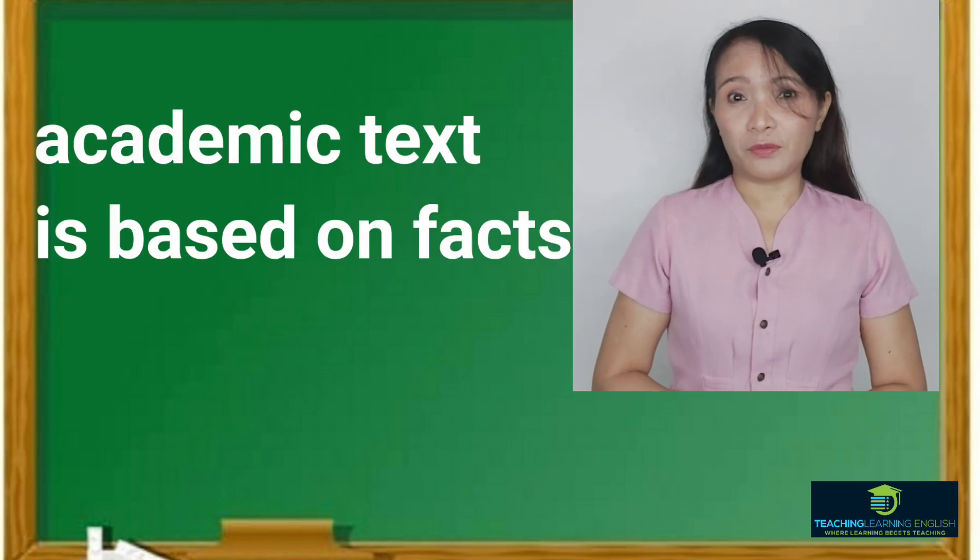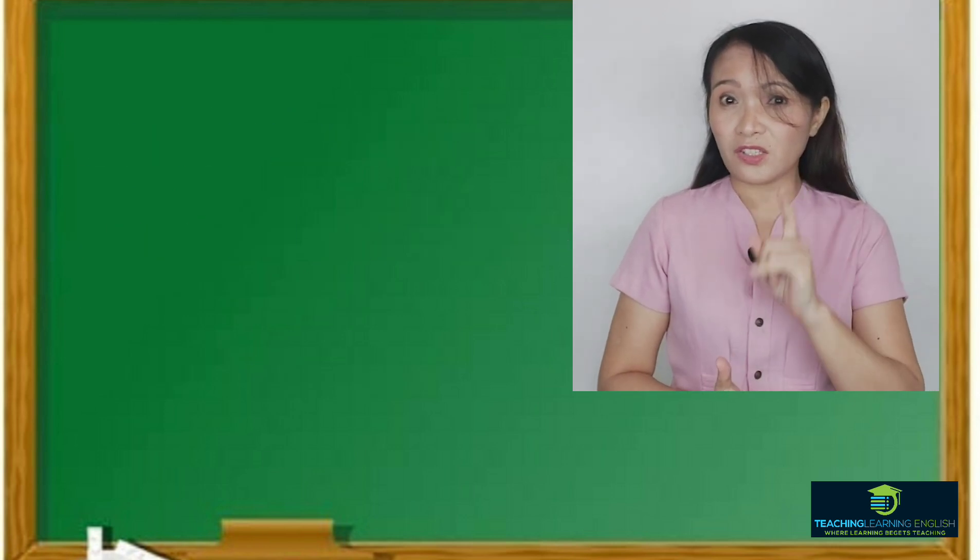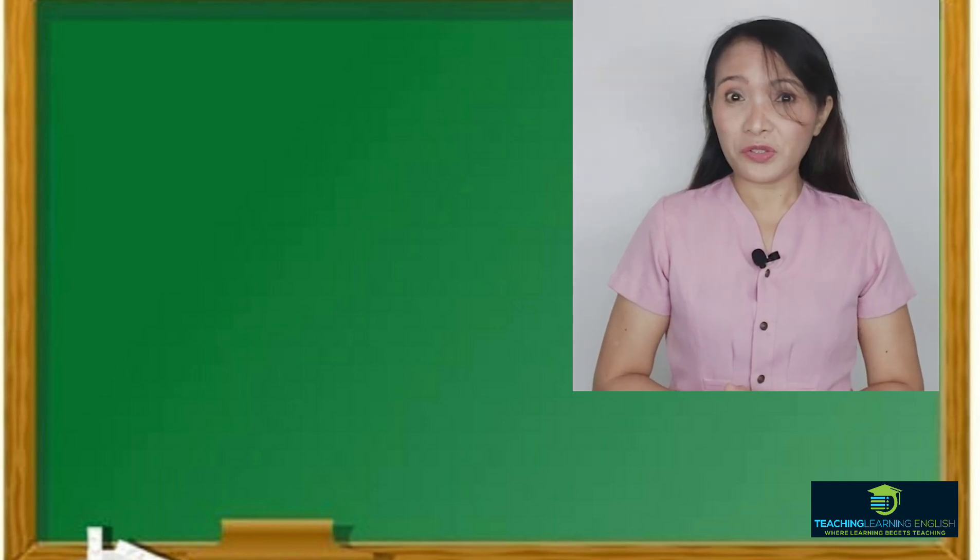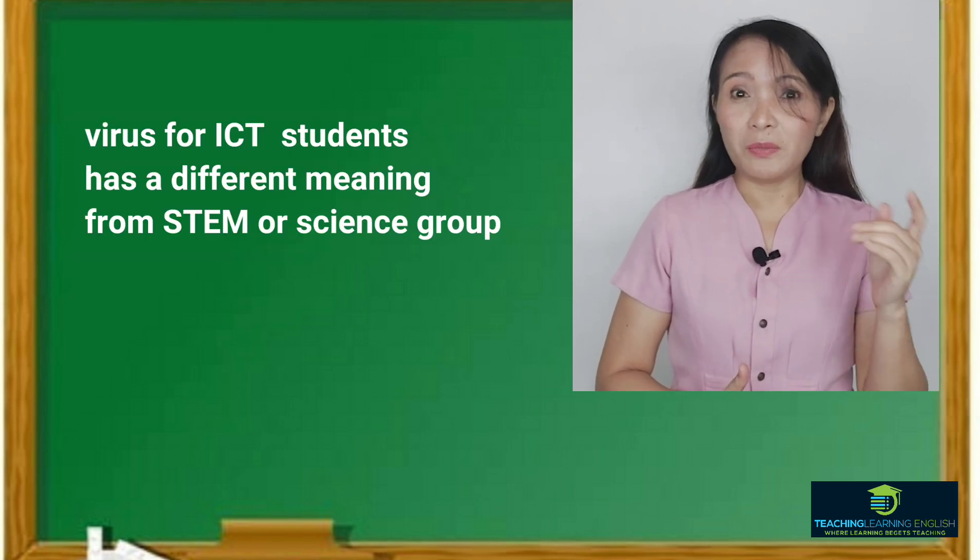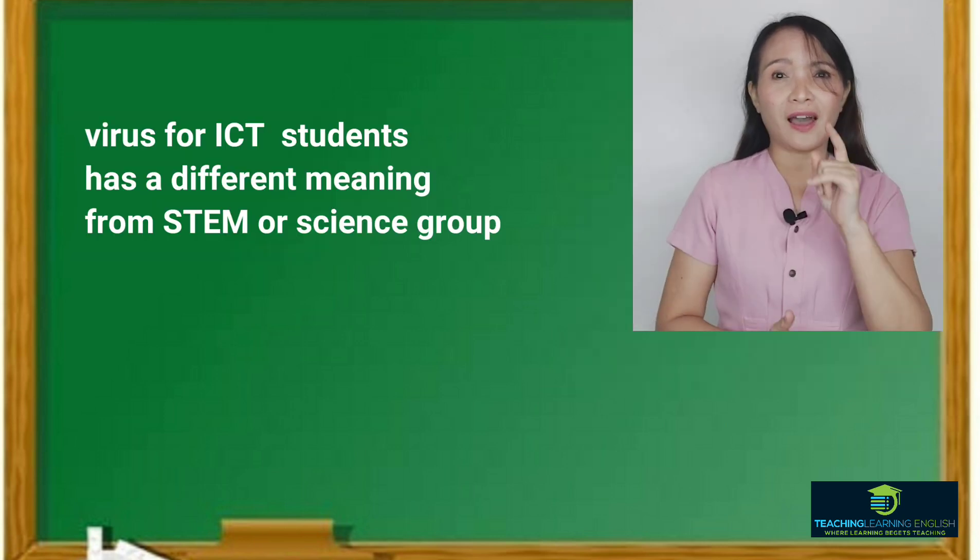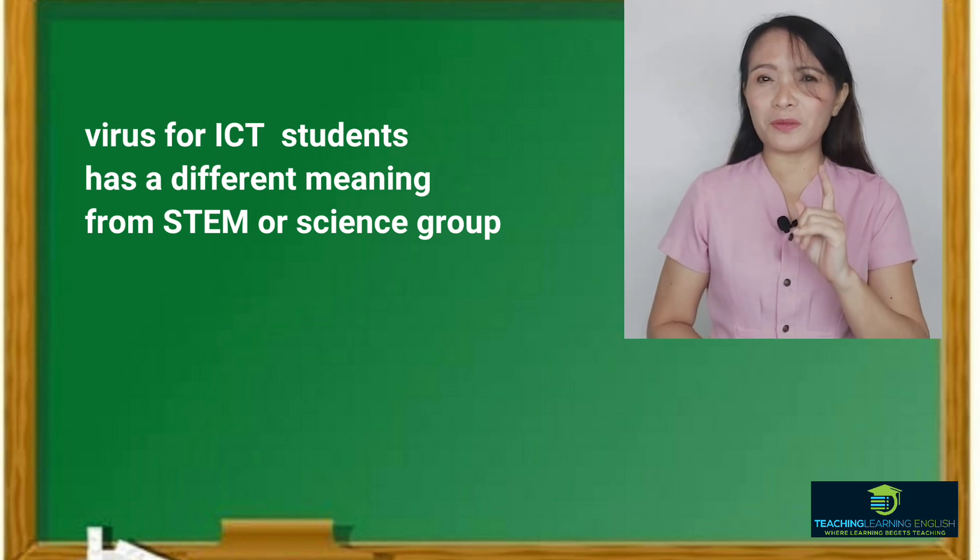It is objective because it is based on facts and not based on opinions. It is technical because there are words or phrases that we need to use for a specific discipline. For example, when we talk of the word virus, the meaning of virus for TVL ICT or information technology students may have a different meaning for STEM or science students.